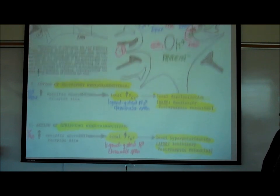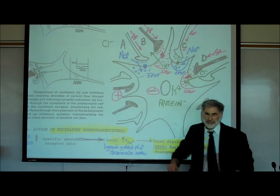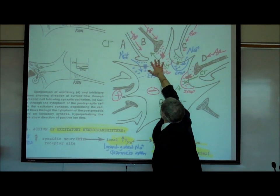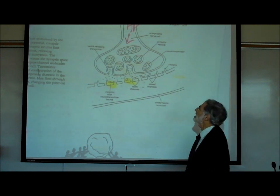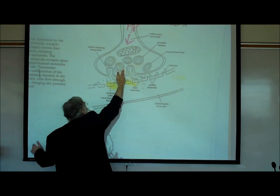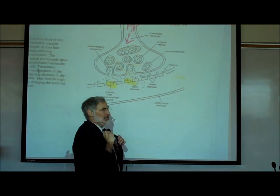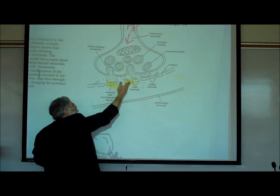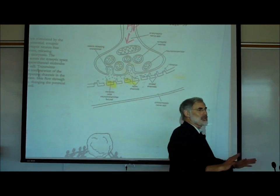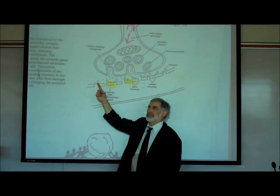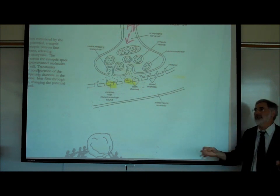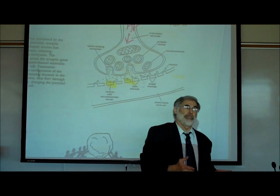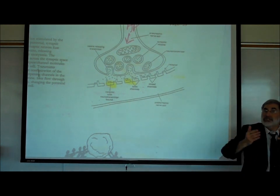Let me summarize. What do all neurotransmitters have in common? An action potential comes down the synaptic knob, causes release of a neurotransmitter onto the postsynaptic cell, the neurotransmitter diffuses across the synaptic cleft and activates a receptor site. The difference between excitatory and inhibitory neurotransmitters is which ion channel they open: does it open sodium ion channels — where sodium flows into the postsynaptic cell — or potassium ion channels — where positive charged potassium flows out?